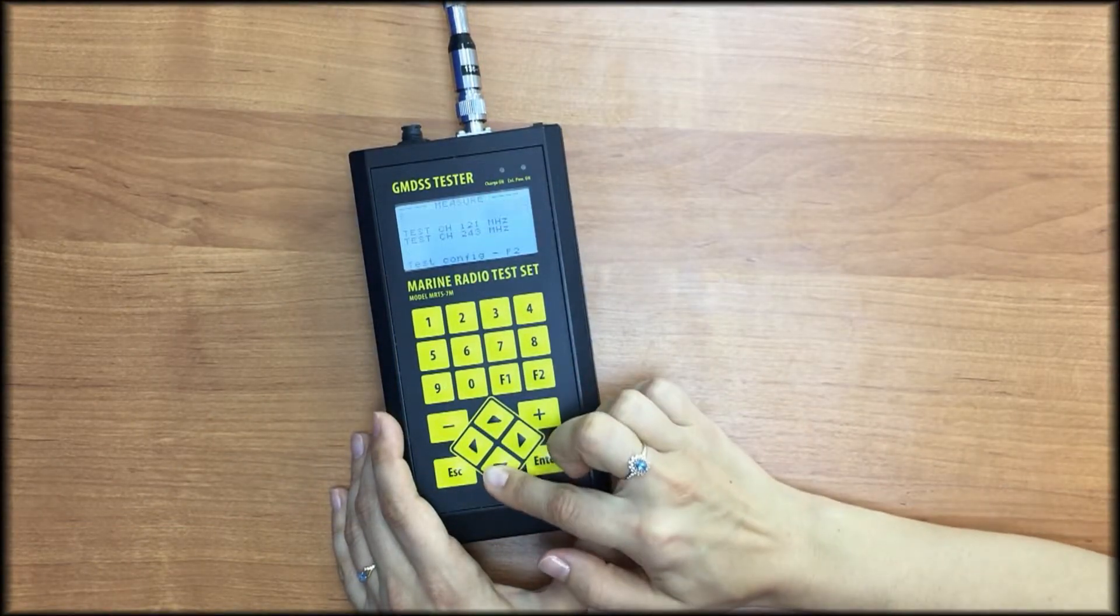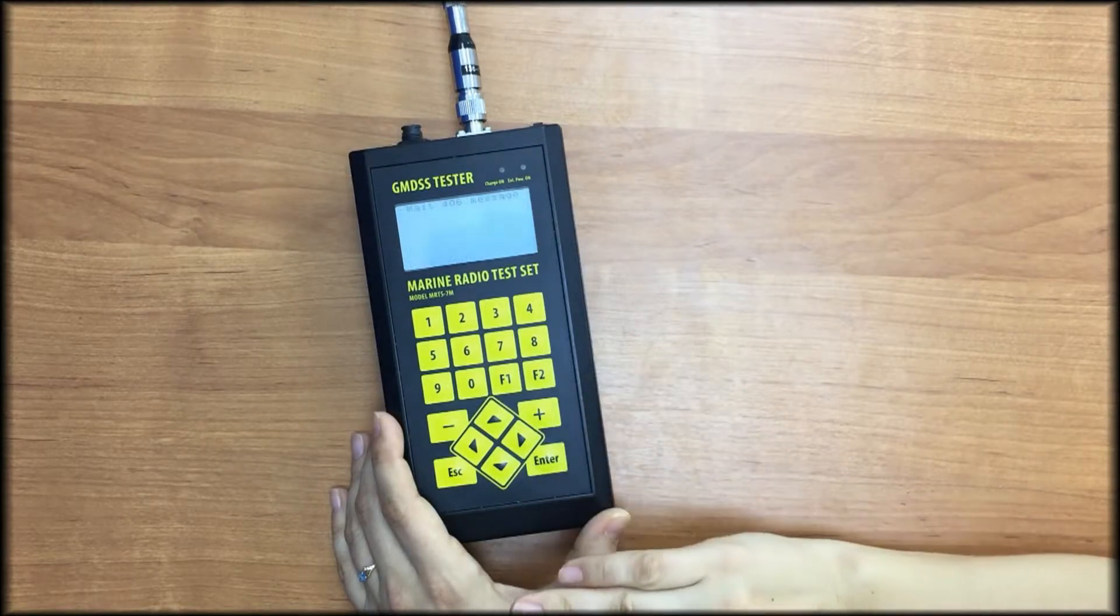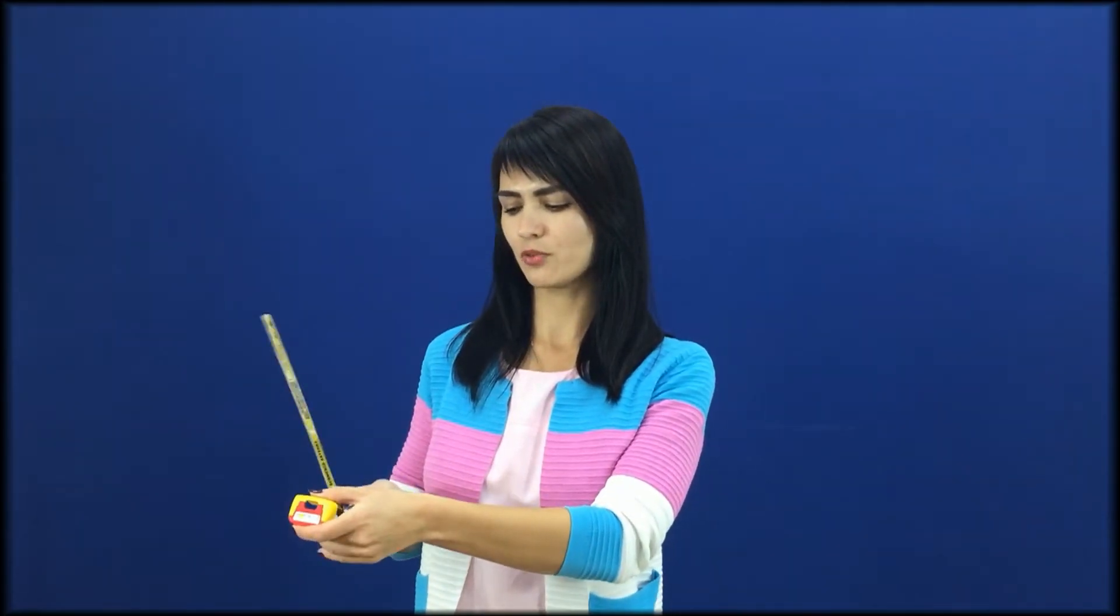Wait for the message. Now we take our PLB to recommended distance of 3 to 5 meters and press test button. The PLB emits the signal.